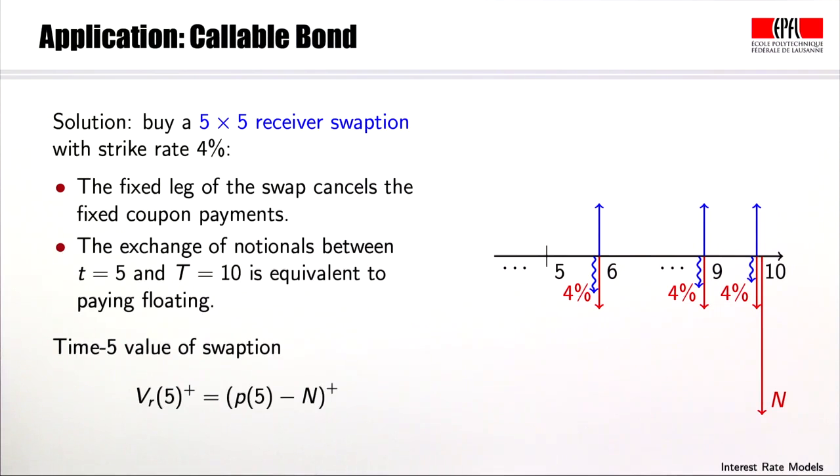From a cash flow point of view this is also clear. Suppose the company exercises the swaption and enters the receiver swap, then the company will receive the 4% coupons on these 5 years and it will pay floating instead.